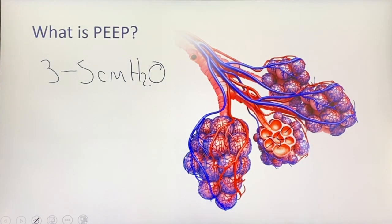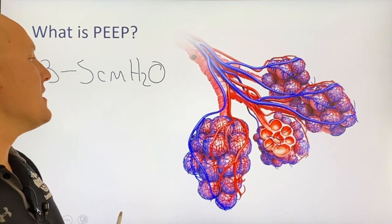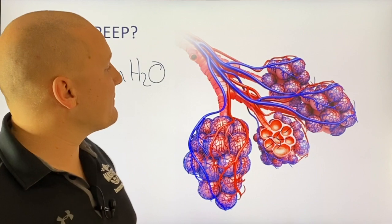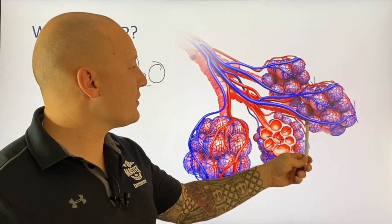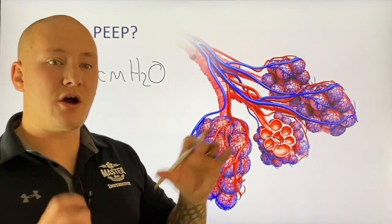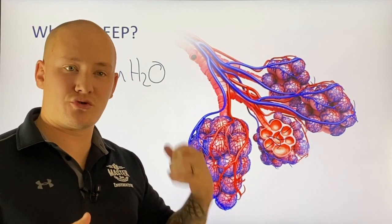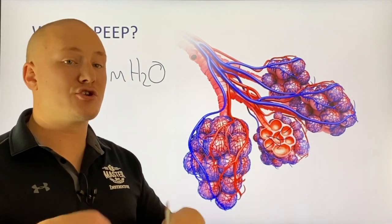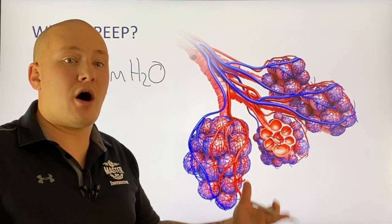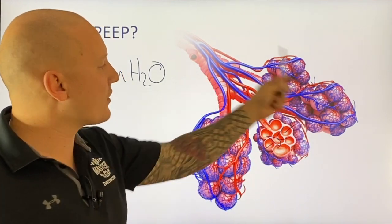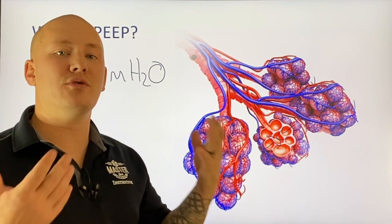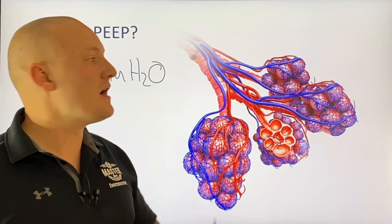PEEP may also actually help recruit already-collapsed alveoli. In a respiratory distress or respiratory failure patient, alveoli can collapse and become closed off to oxygenation. Introducing a PEEP valve on a BVM during respirations can start to recruit some of those collapsed alveoli, improving the overall surface area available for oxygenation and improving the patient's overall oxygenation and ventilation status.